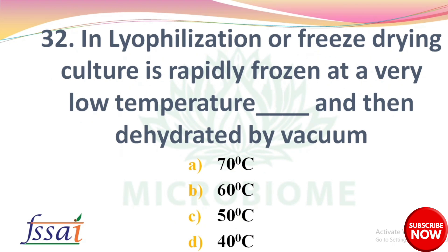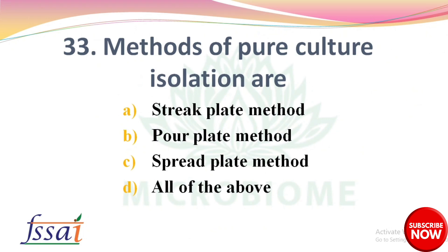Next: In lyophilization or freeze-drying, culture is rapidly frozen at a very low temperature of dash and then dehydrated by vacuum — options: 70°C, 60°C, 50°C, 40°C. The right answer is option A, 70 degrees Celsius. Next: Methods of pure culture isolation are — options: streak plate method, pour plate method, spread plate method, all of the above. The right answer is option D, all of the above: streak plate, pour plate, and spread plate.